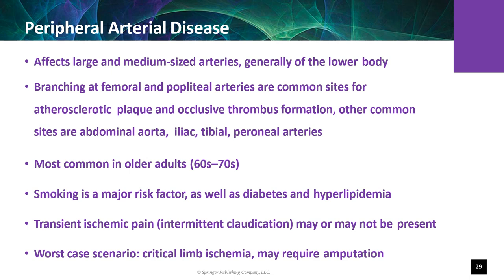Peripheral arterial disease is a disorder caused by stenosis or occlusion of the aorta or arteries of the limbs. It is most common in the legs and can result in vascular rupture, dissection, and thromboembolism. The most common presentation is intermittent claudication — pain, ache, cramp, or fatigue of muscles that occurs during exercise and is relieved by rest. Intermittent claudication always presents below the site of stenosis.